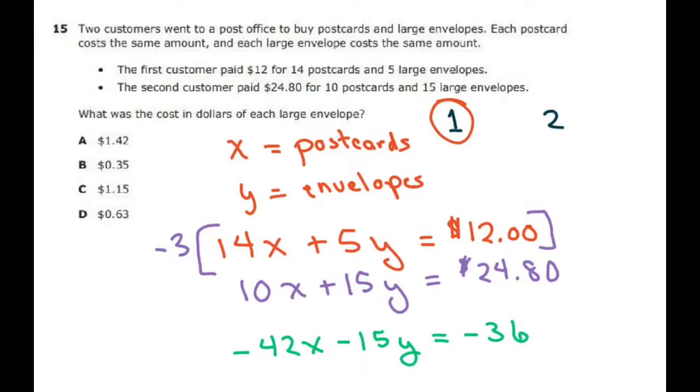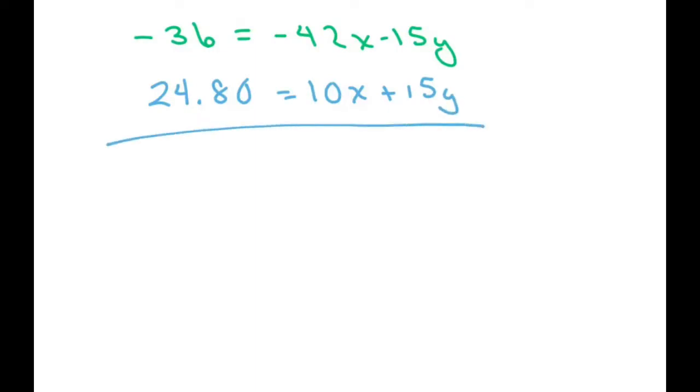As long as I multiply negative 3 by each term, let's write it out again. We have -36 equals -42x - 15y, and my other equation was $24.80 equals 10x + 15y. All right, now when you add this up you're going to get -12 equals -32x. These two cancel, they zero out.